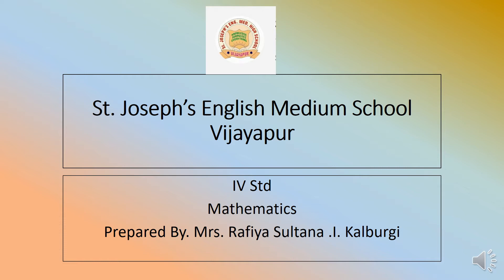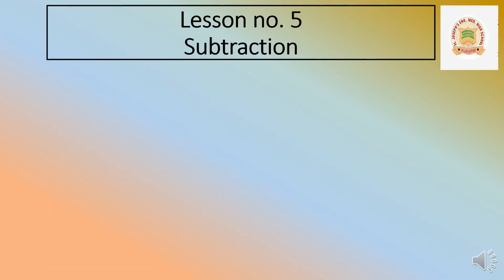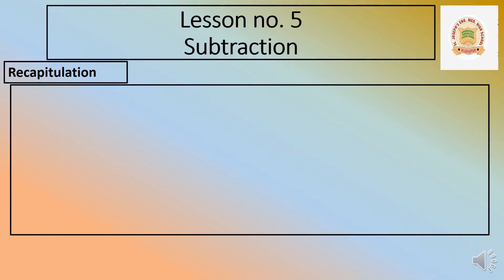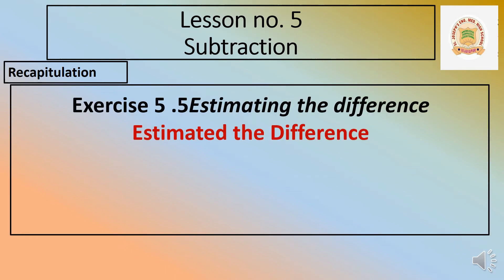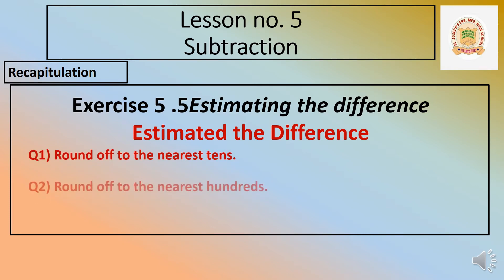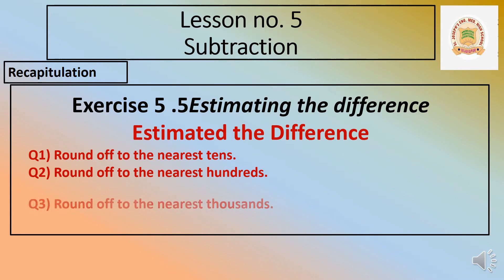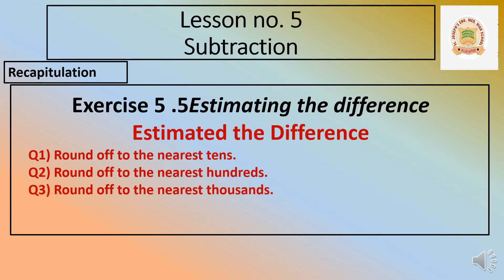Students, in the last video we covered Lesson number 5, Exercise number 5.5 - Estimating the Difference. We solved Exercise 5.5, where we estimated the difference by rounding off to the nearest tens, nearest hundreds, and nearest thousands. I hope you understood that estimating numbers topic perfectly by doing addition, subtraction, and rounding off numbers.